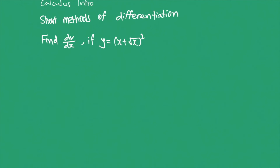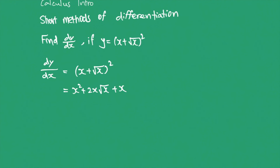The example question is: find the derivative function of y equals (x + √x) squared. To solve this, we need to expand the expression. So (x + √x)² equals x² + 2x·√x + x. Writing √x as x to the power of one half, we get 2x times x^(1/2) = 2x^(3/2). The expression can be rewritten as x² + 2x^(3/2) + x.